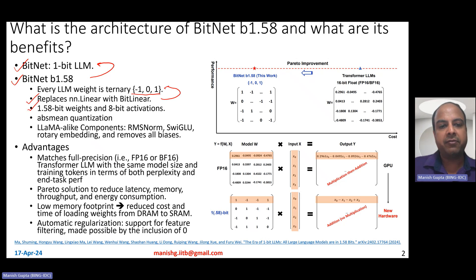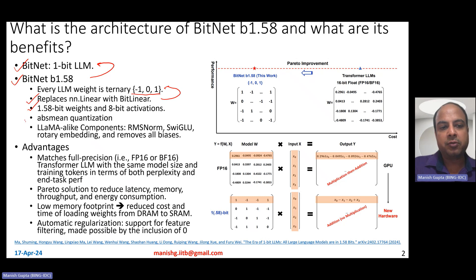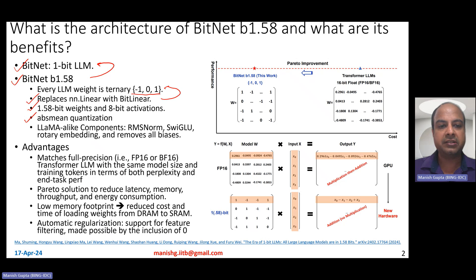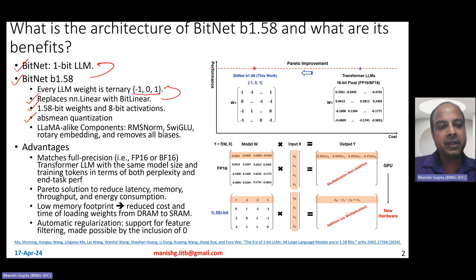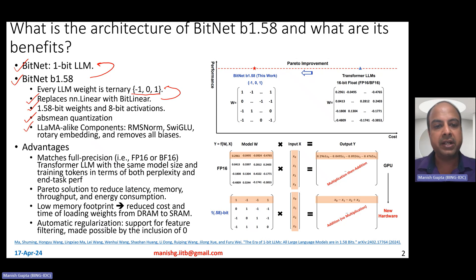It's basically 1.58-bit weights and 8-bit activations. Unlike the absolute max quantization done in BitNet, BitNet 1.58 does absolute mean quantization, because it has to incorporate the third level — zero. It also makes use of LLAMA-like components like RMS norms, SwiGLU activations, rotary position embeddings, and it removes all biases.